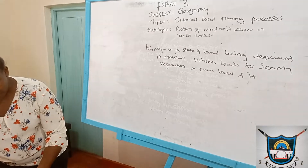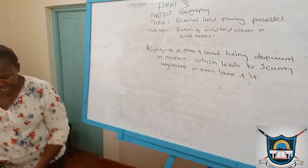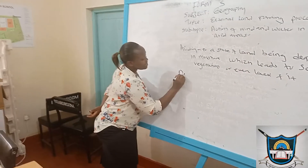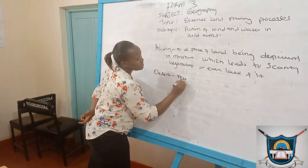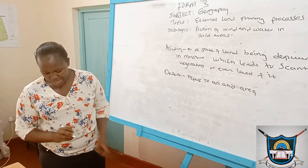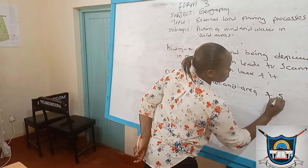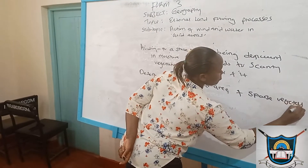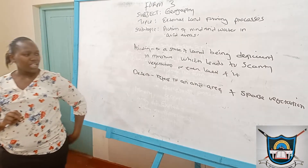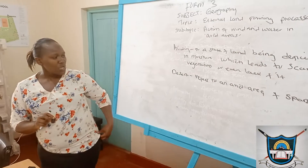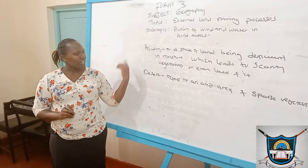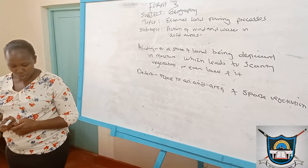Now, having defined aridity, we go to the definition of the term desert. Desert refers to an arid area of sparse vegetation. So in other words, when we talk of aridity, it is the same as talking of a desert.